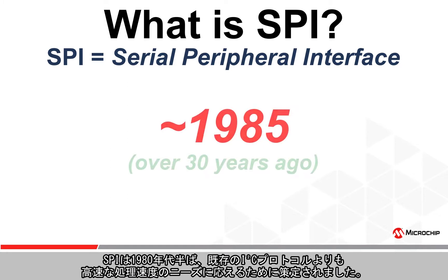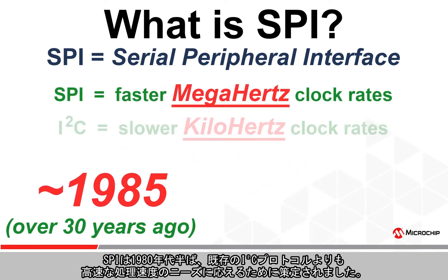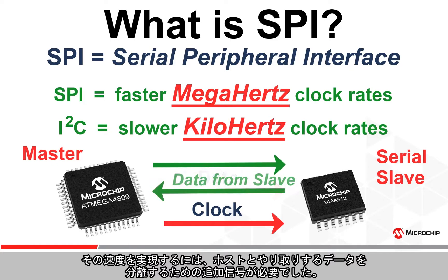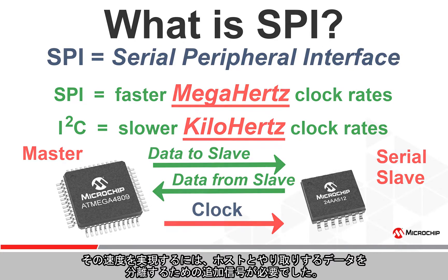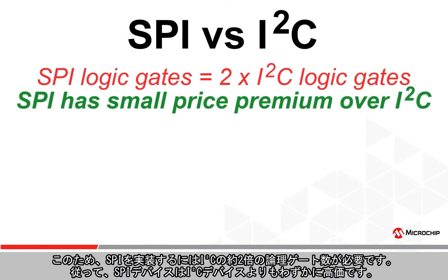SPI was created in the mid-1980s to address the need for faster throughput speed over the existing I2C protocol. To gain that throughput speed, an additional signal was needed to isolate data to and from the host. Because of this, about twice as many logic gates are needed to implement SPI over I2C, which means that SPI devices will have a slight price premium over I2C devices.